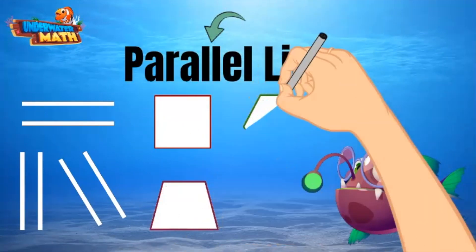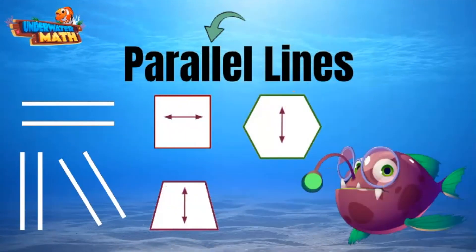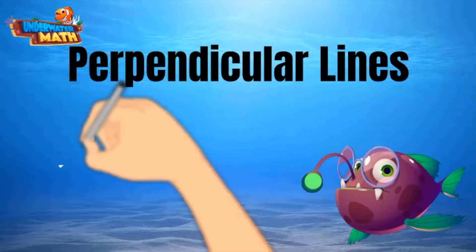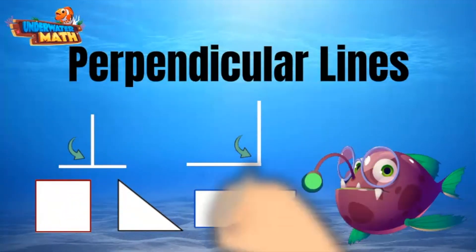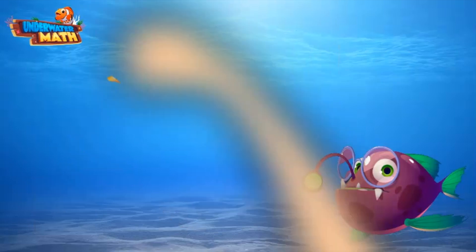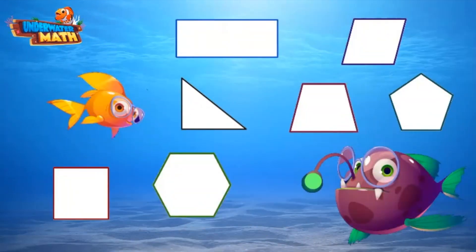Shapes such as squares, trapezoids, and hexagons have parallel lines. Perpendicular lines intersect forming a 90 degree right angle. Shapes such as squares, right triangles, and rectangles have perpendicular lines.